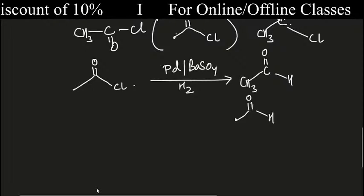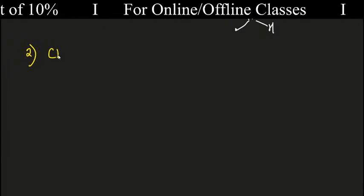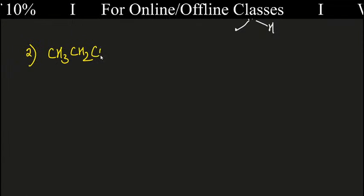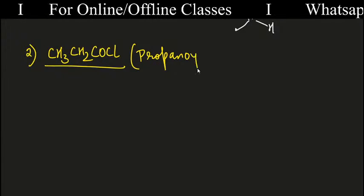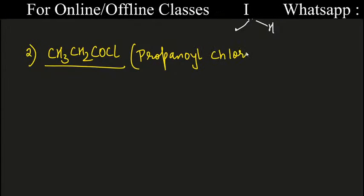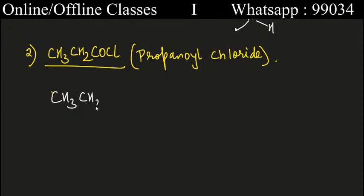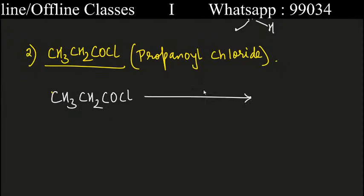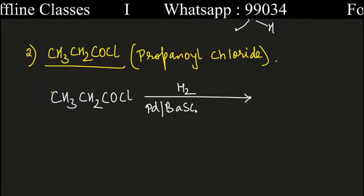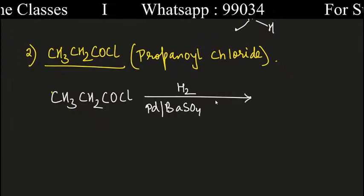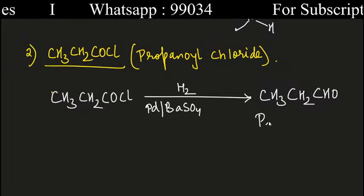Let's take one more example — propanoyl chloride, which has 3 carbons. With H₂ and PdBaSO₄, and sulfur plus quinoline — you can write xylene if you want, no problem. What forms? CH₃CH₂CHO — propanal is formed from propanoyl chloride.